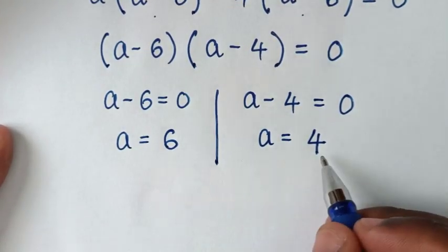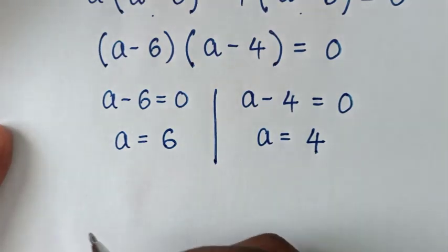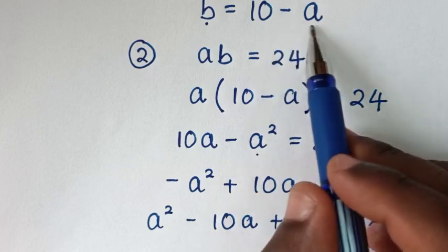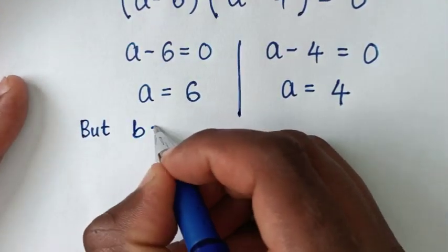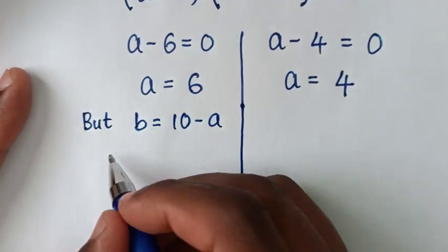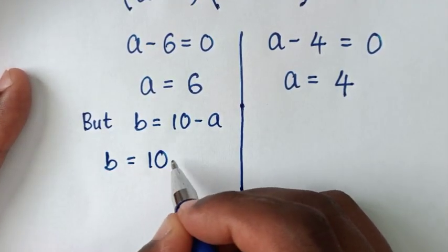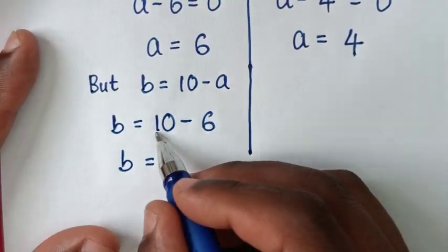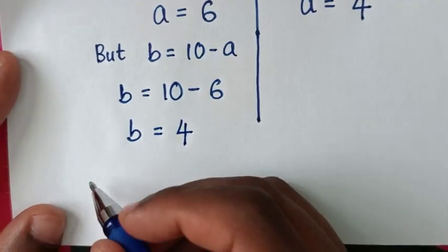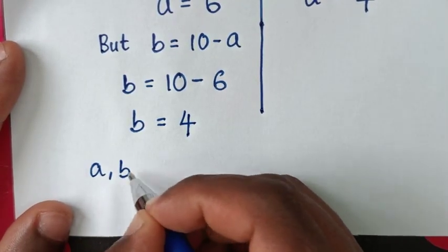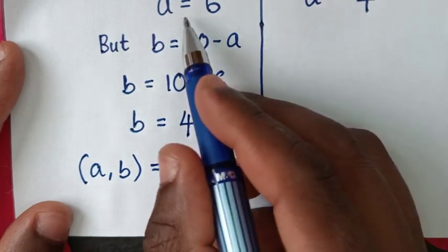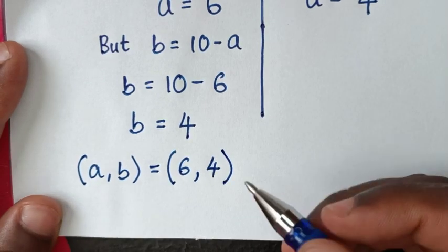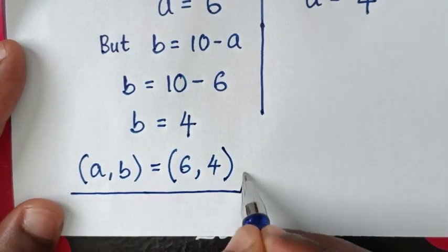So we get the values of a. Now, to get the values of b, we recall that b is equal to 10 minus a. For the first solution where a equals 6, b equals 10 minus 6, which is 4. Therefore, the first solution is a equals 6, b equals 4, written as (6, 4).